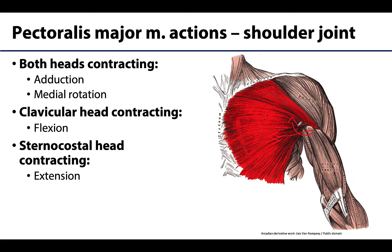If you want to look at what those actions look like, I'd highly recommend those resources — there'll be a link in the learning objective text. When only the clavicular head contracts alone, it can flex the shoulder joint, bringing the arm anteriorly — it's coming anteriorly in the sagittal plane.